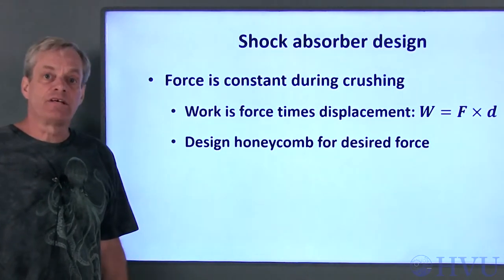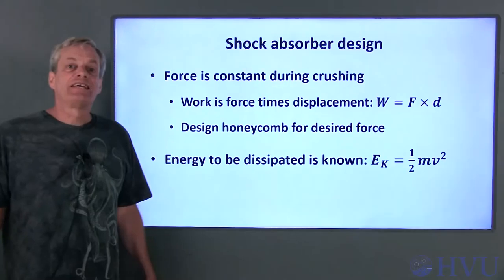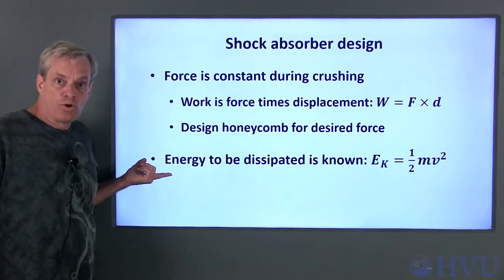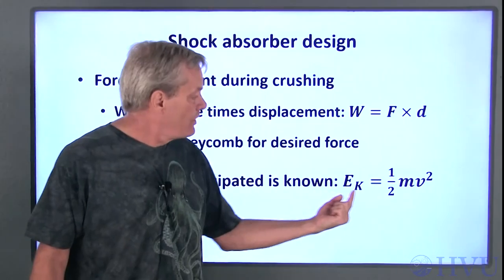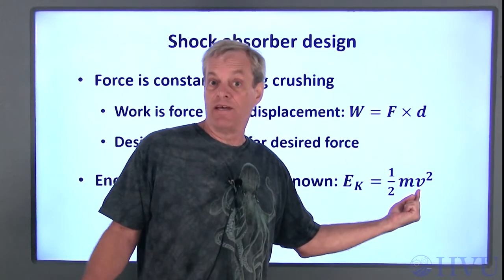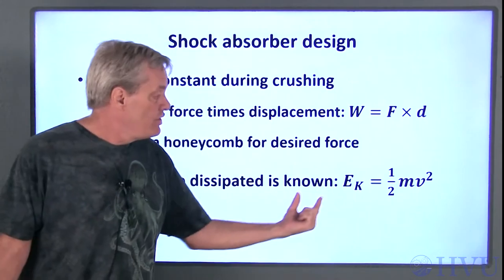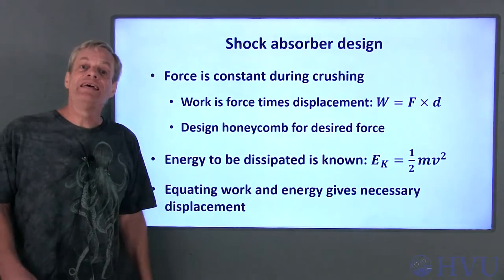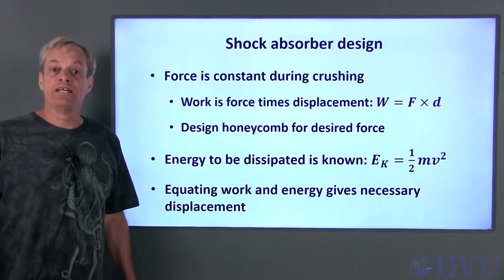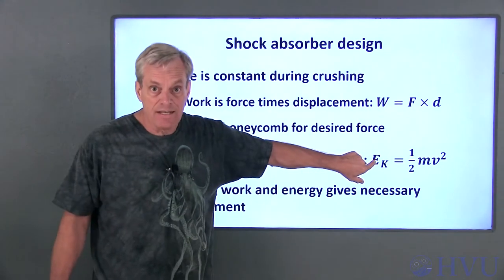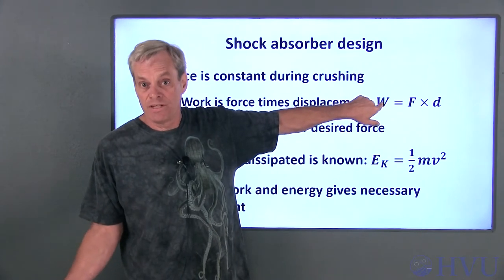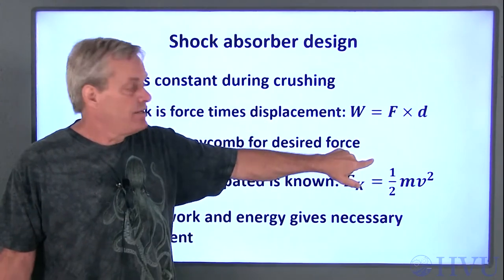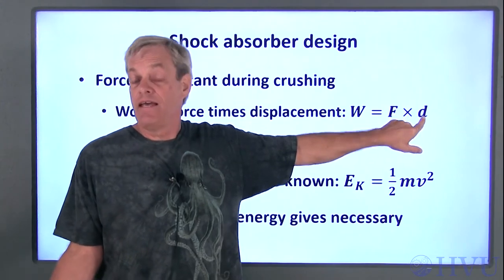The honeycomb material can be designed to crush at a desired force. The kinetic energy you need to absorb is one-half times the mass times the velocity squared. If you know the lander's mass and you can estimate a maximum landing velocity, you know how much energy you need to dissipate. Work and energy are the same thing, so the kinetic energy you need to dissipate equals the work done in crushing the honeycomb material. Equating these two tells you how long the honeycomb material needs to be, and your design is done.